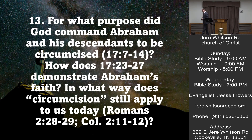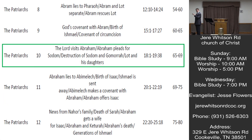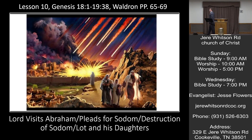Now we're moving into lesson 10 — we've got a lot to cover. The Lord visits Abraham, Abraham pleads for Sodom, the destruction of Sodom and Gomorrah, and at the end of chapter 19, what we read about Lot and his daughters. Genesis 18 and 19 is where you need to be in your Bibles. If you have the Waldron book 'In the Beginning God,' pages 66-67 would be a good place to have it open.